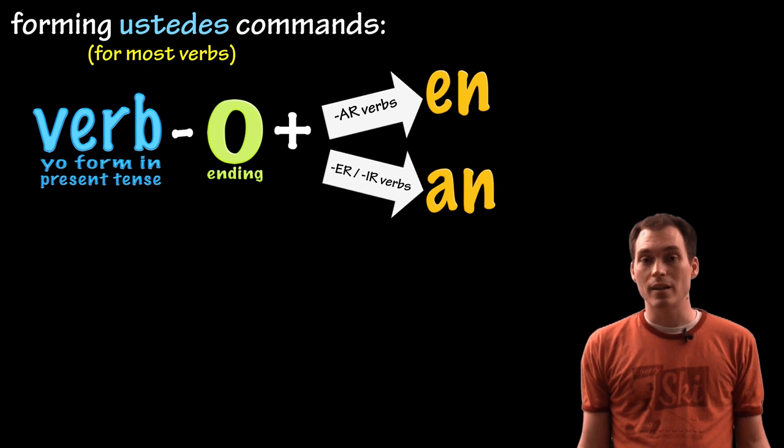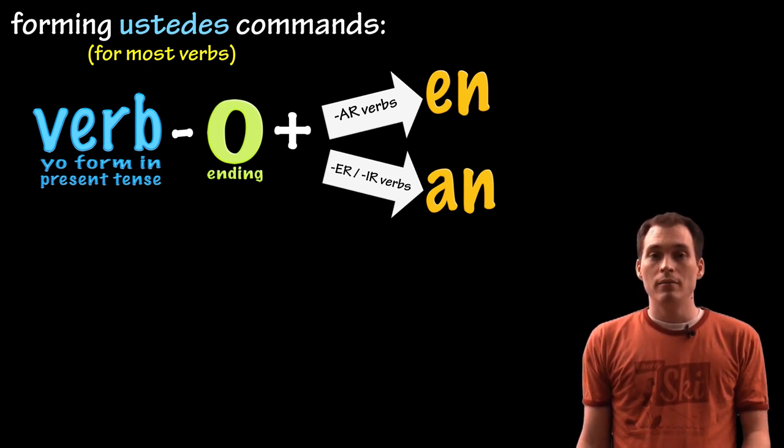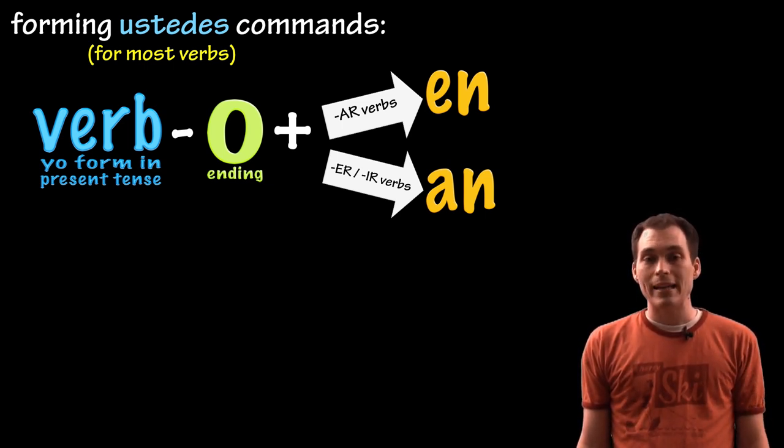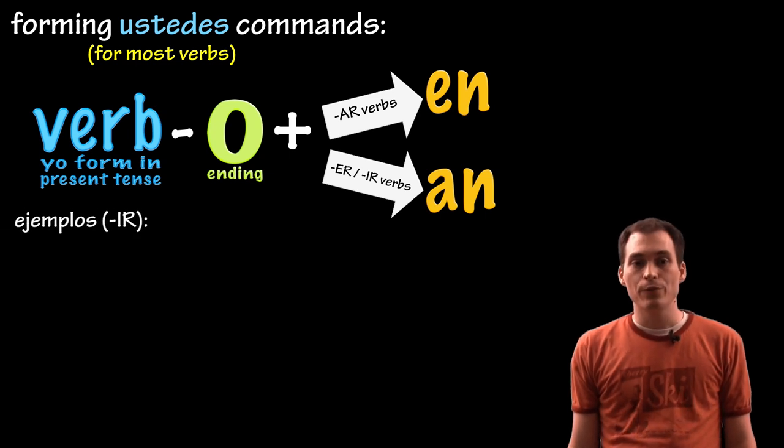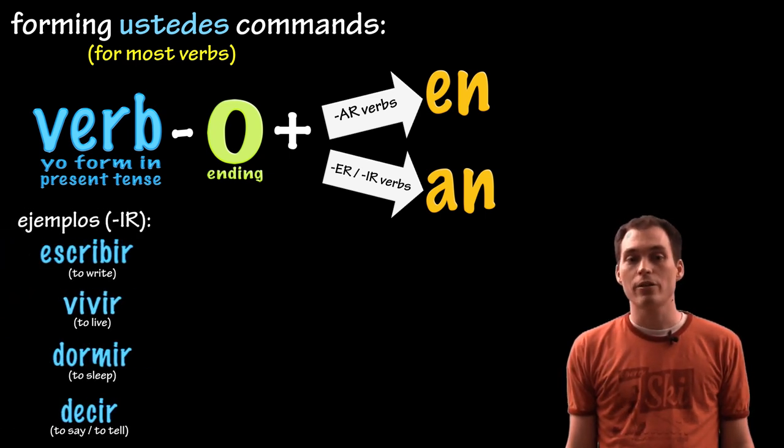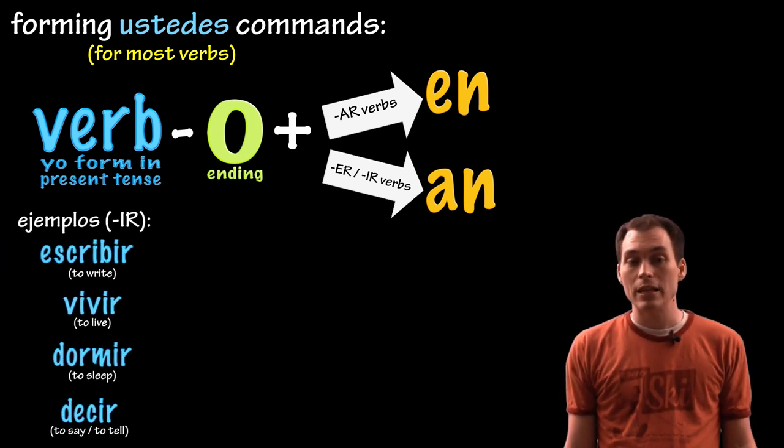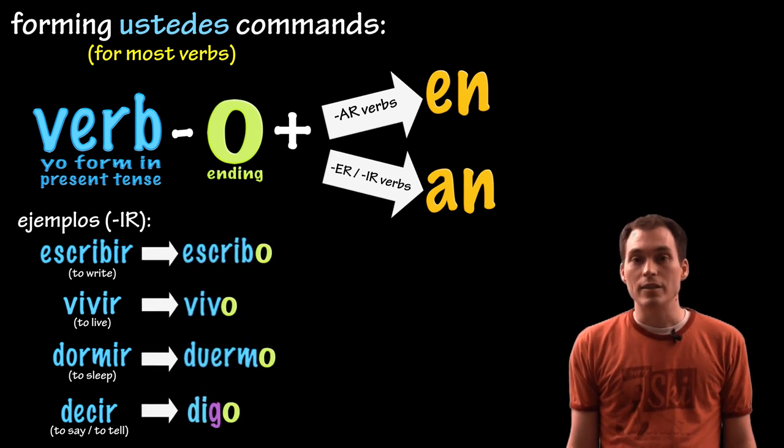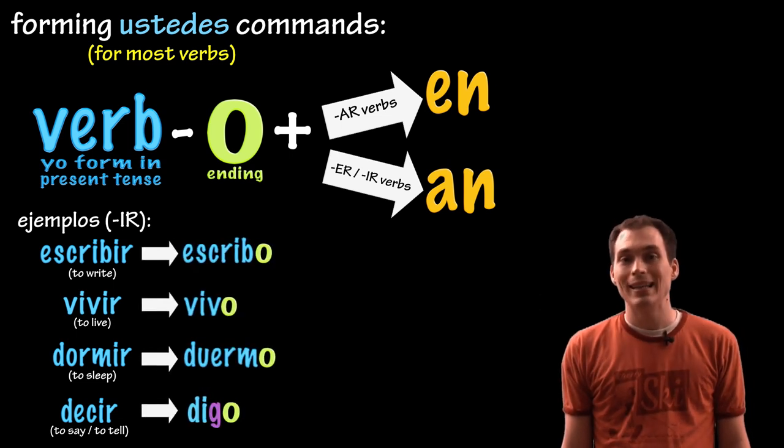And we'll do some IR verbs, IRs are just going to be the same thing, take the verb in the yo form, take off the O and add AN. Some examples. Escribir, vivir, dormir, and decir. Let's change those to the yo forms, escribo, vivo, duermo, and digo.